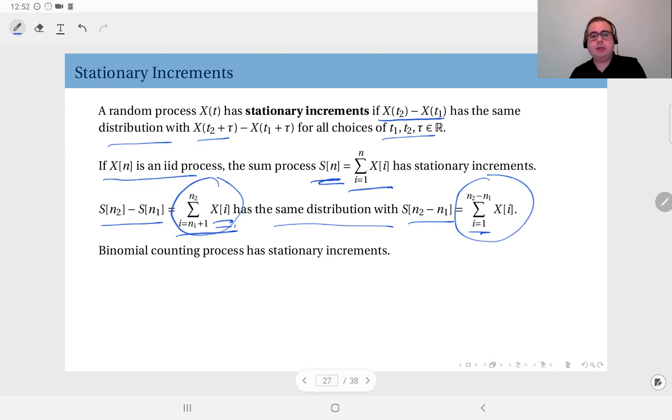And clearly, since binomial counting process is defined as the sum process associated with the iid Bernoulli sequence, it has both independent increments and stationary increments. And we have made use of the independent increments property in deriving its autocorrelation function.